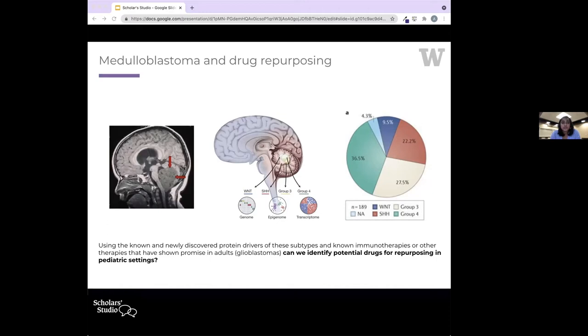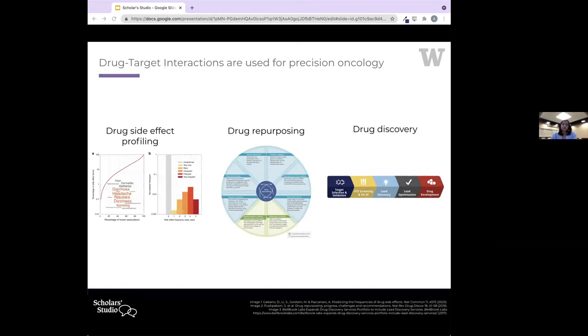Recently, there's been a lot of progress in identifying proteomic drivers, which is the focus of my project. Using known and newly discovered protein drivers of these subtypes, are we able to repurpose drugs from adult settings into these pediatric settings? So this is a drug repurposing and drug target interaction problem.